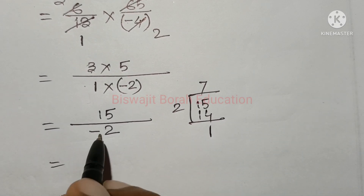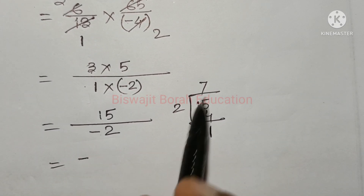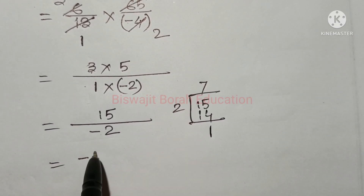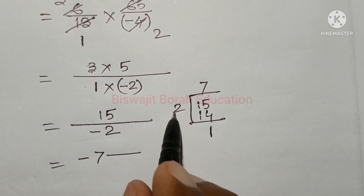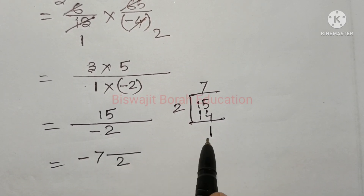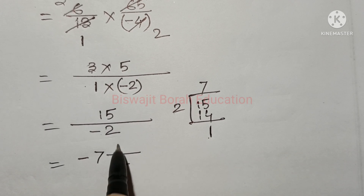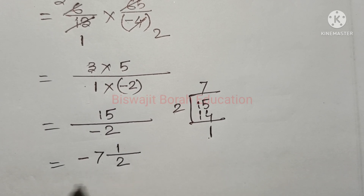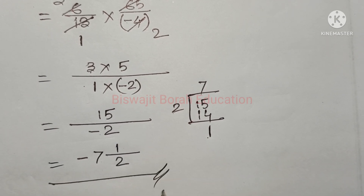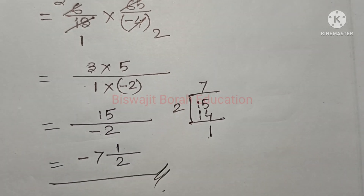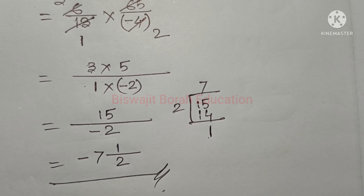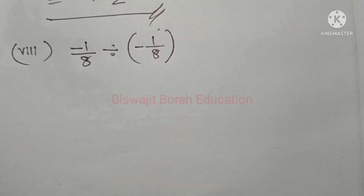So minus into minus 2, then we will be able to do 7. So we will be able to do 2. So minus 7, 1 by 2. We will be able to do 2.